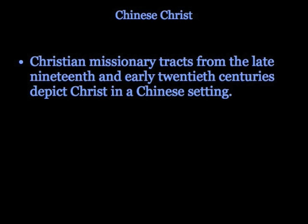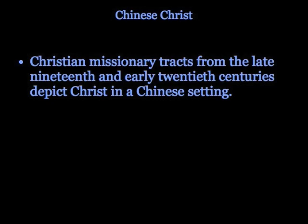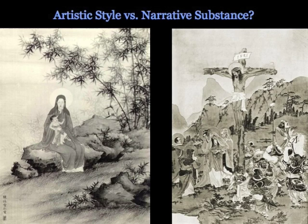To show you some of the alternatives, we'll take a look at the way Christ was depicted in missionary tracts in China in the 19th and 20th century. Here you can see quite clearly Jesus didn't live in a bamboo grove, yet this is obviously the Virgin and the child. Here's a crucifixion scene. Here's a couple of interesting ones of the Last Supper — a nice traditional Chinese meal — and the resurrection with Chinese warriors taking the place of Roman ones.